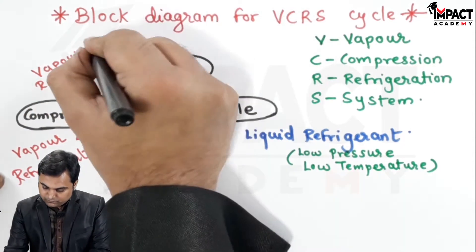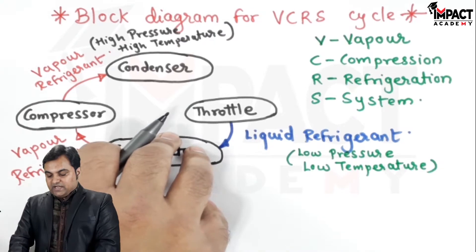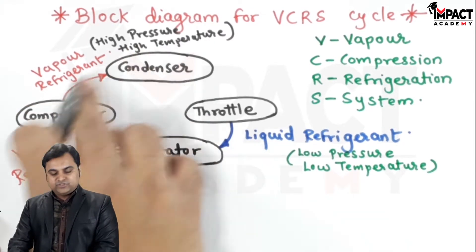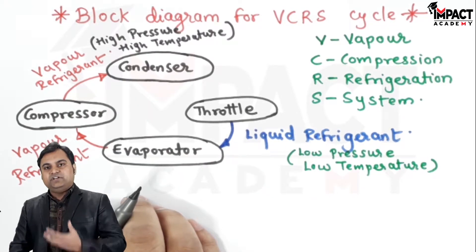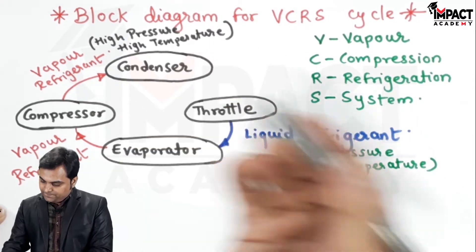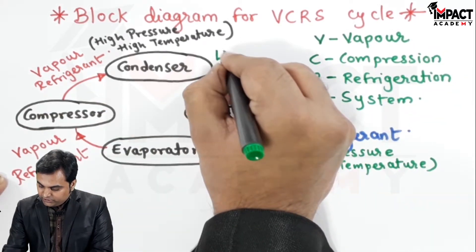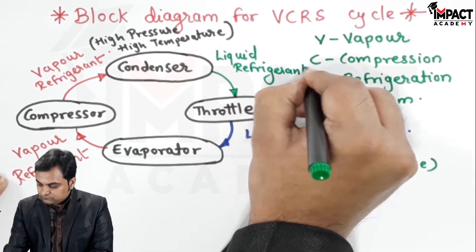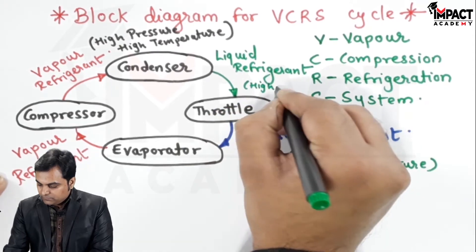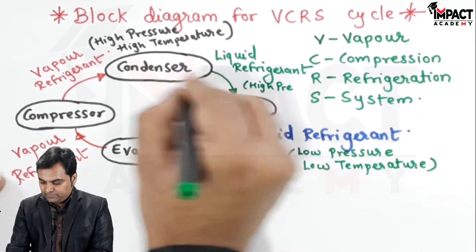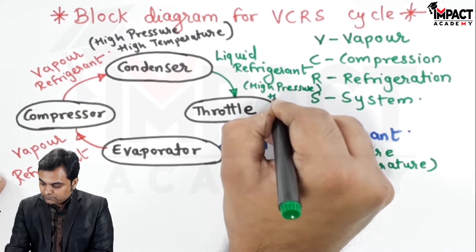But here it is at high pressure and high temperature. This high pressure, high temperature vapor enters the condenser in a saturated condition, where it condenses into liquid refrigerant which is again at high pressure and high temperature, because inside the condenser the temperature remains the same — it is latent condensation.